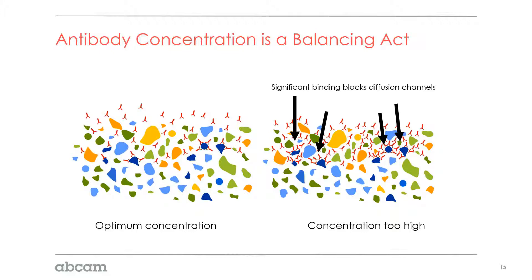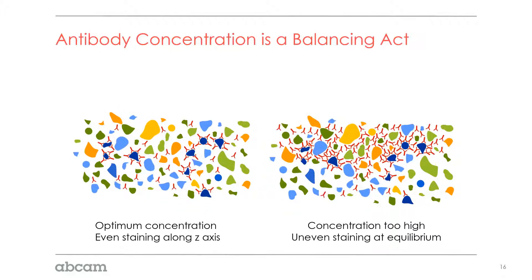At the optimal concentration, you get good penetration through your tissue. But at a concentration that's too high, the antibody blocks the channels through the tissue and cannot penetrate further in. You'll get a very dense ring of staining on the outside — a telltale sign that concentration is too high. With uniform labeling, all epitopes are labeled evenly through the depth, whereas at too high a concentration, you get uneven staining and a dense band outside the tissue, which is non-ideal.